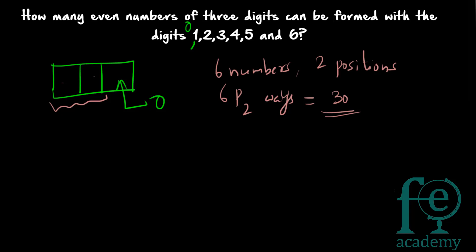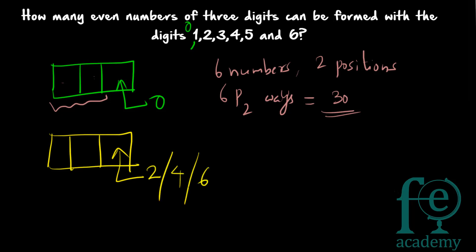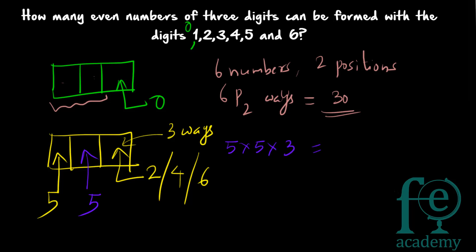Second case: the units digit is not 0. For an even number the units digit can be 2, 4, or 6 — so there are 3 ways to fill the units digit. For the 100th place, 0 cannot go there, and one digit is already used in units place, so out of 7 digits, 2 are gone, leaving 5 options. The 10th place also has 5 remaining digits. So total = 3 × 5 × 5 = 75 numbers.